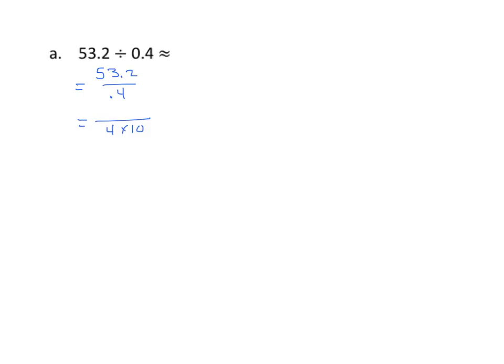And I have 4 tenths times 10, and 53 and 2 tenths times 10. And I'm going to now have 532 divided by 4. I'm going to look for a fact that's divisible by 4. This might not seem intuitive,